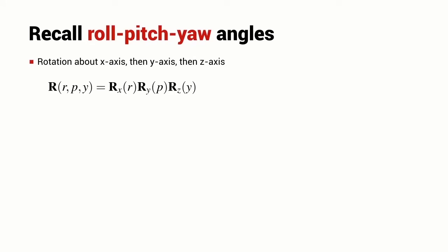In a much earlier lecture, we introduced the notion of roll-pitch-yaw angles. It's an intuitive way to think about the orientation of a body in space, and we can think about it as the product of a number of elementary rotations.